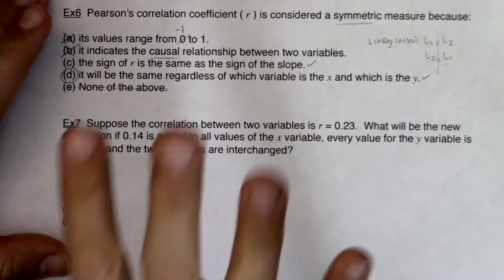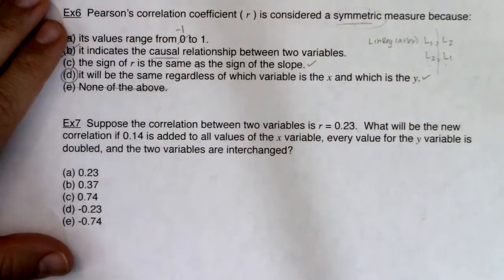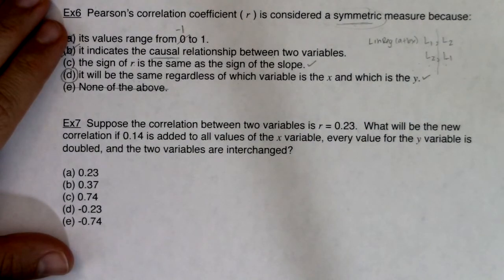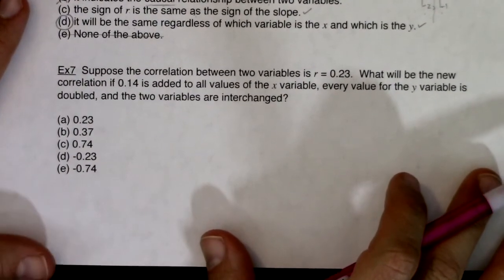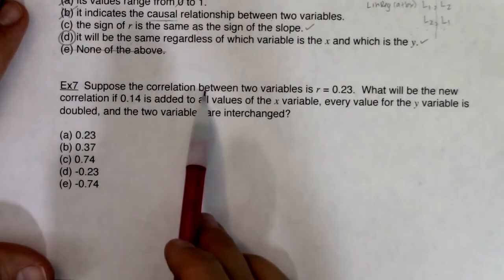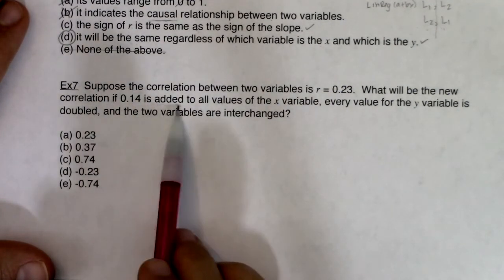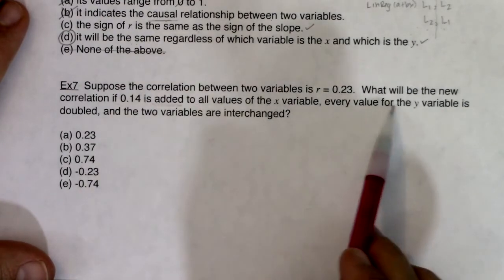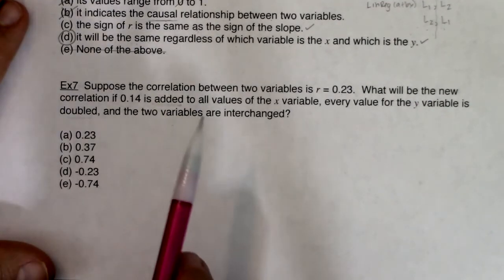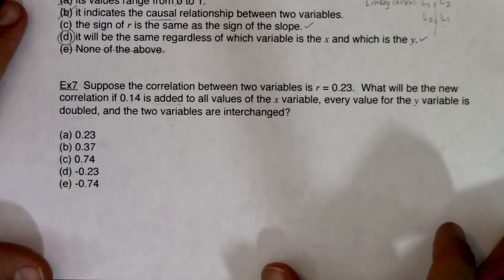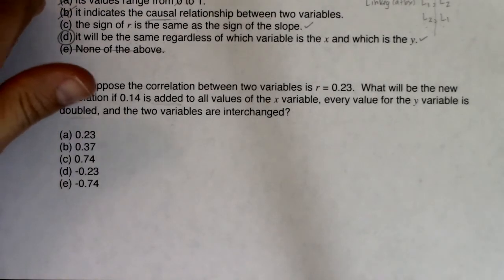So the reason we consider R a symmetric measure is that property — it doesn't matter what you're calling x or y. It'll change your slope and your y-intercept, but it won't change the R value. While statement C is also true, it's not the reason R is considered symmetric. Now for example 7, we have some more to unpack. Suppose the correlation between two variables is 0.23 — this really refers to the third and fourth properties of R.